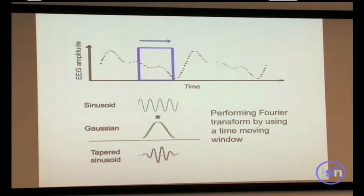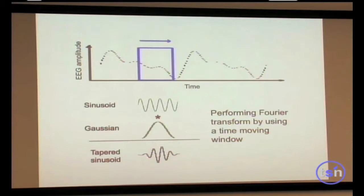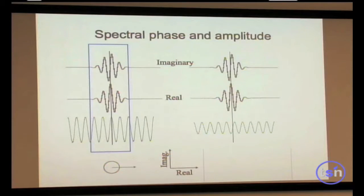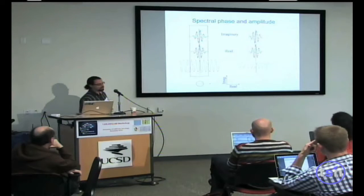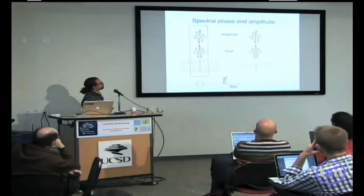Now, given our EEG signal, we select a window and perform time-frequency decomposition on that moving window. We use a sinusoid multiplied by a Gaussian to obtain a tapered sinusoid. This is more relevant for the classical Fourier transform before we discuss wavelets. We get two tapered sinusoids — one for the sine and one for the cosine — giving us the real and imaginary parts.